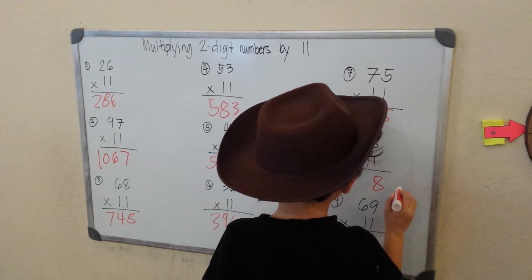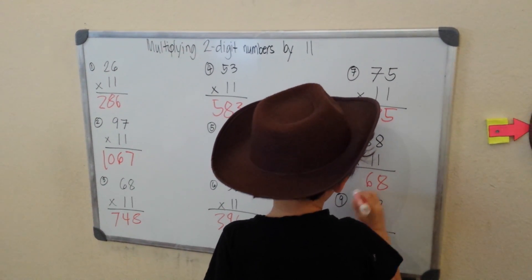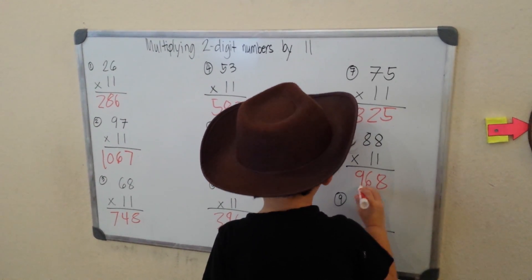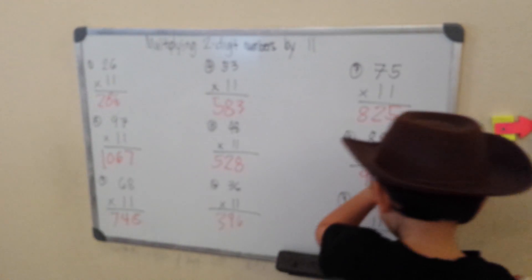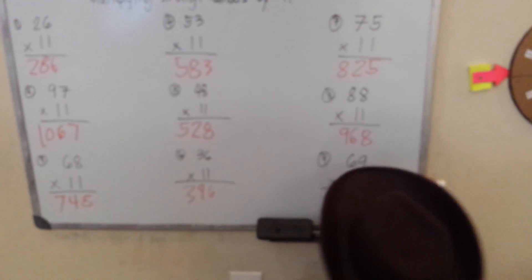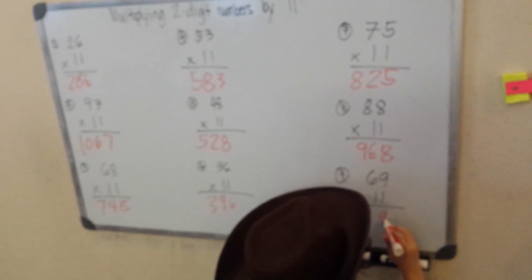88 times 11. Copy the 8. 8 plus 8, it's going to be 16. Carry 1, 1 plus 8, 9. 968.